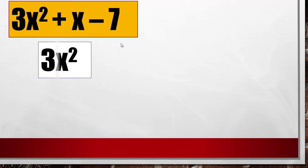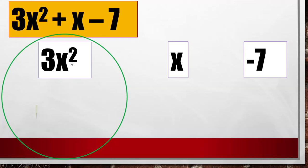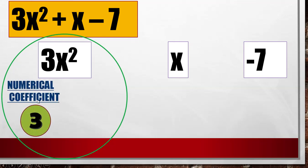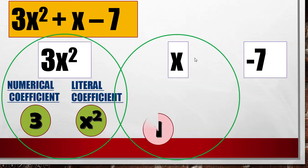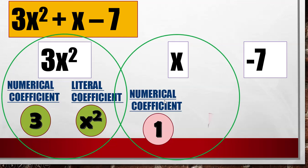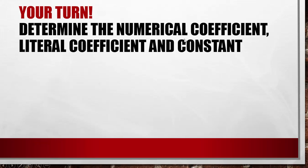In 3x² + x − 7, the terms 3x², x, and negative 7 are the variable terms. For the first term 3x²: 3 is what we call the numerical coefficient, and x² is the literal coefficient. For the second term x: 1 is the numerical coefficient, and x is the literal coefficient. Negative 7 is what we call the constant — it has no variable.